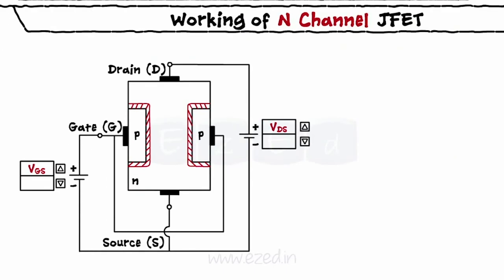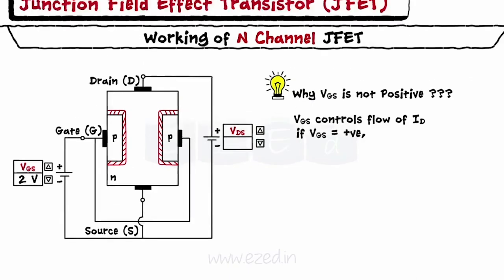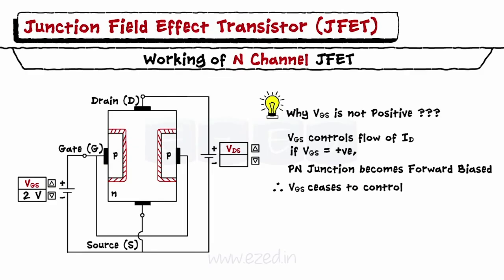Studying all the cases, you may have a question: why is VGS never positive? Gate voltage primarily controls the flow of the drain current. If we apply VGS positive, this will make the PN junction forward biased and the gate ceases to control the current flow. Thus, we never apply a voltage above 0V to the gate terminal.